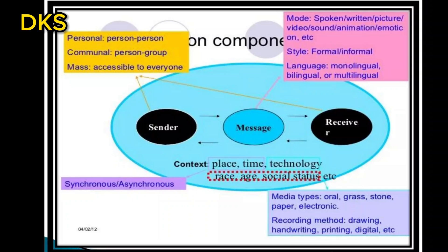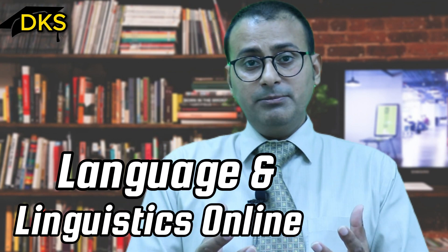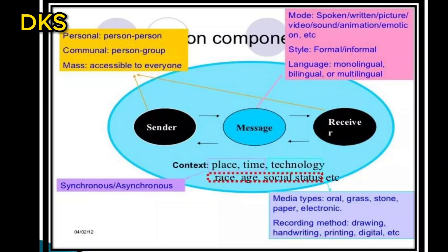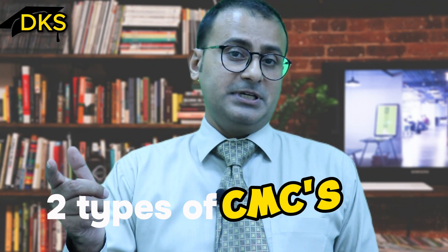There will also be context — how the teacher has determined the context. Whether the teacher is sitting in the university and the students are sitting in their homes, what is the time, what is the place, and what he or she intends to teach. There are two types of CMC: synchronous, in which the teacher will be live with the students, and asynchronous, in which the teacher will not be live with the students.